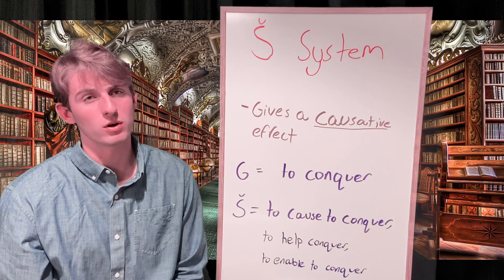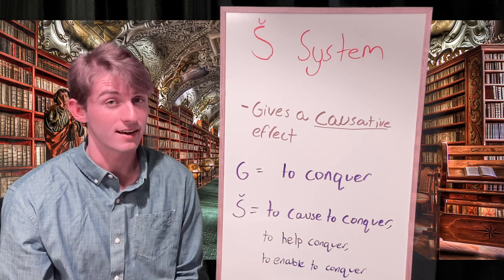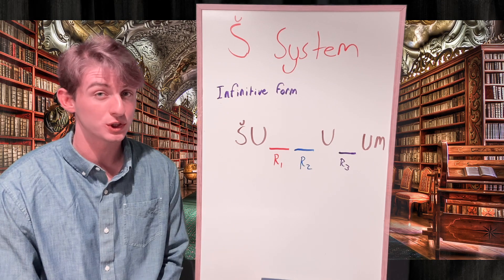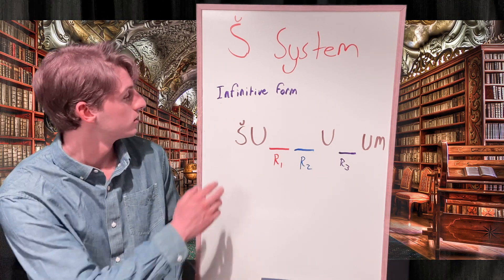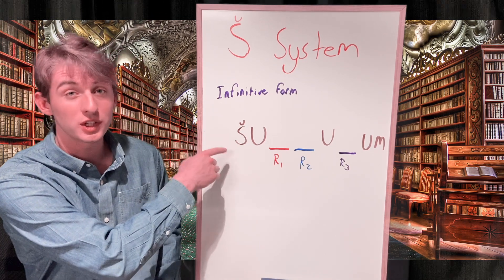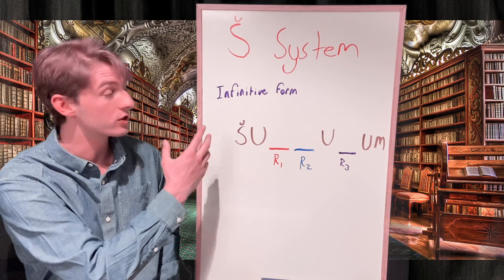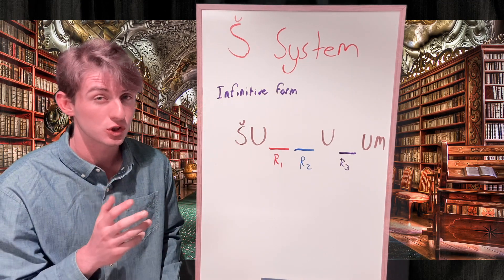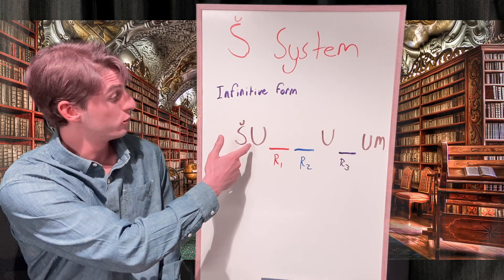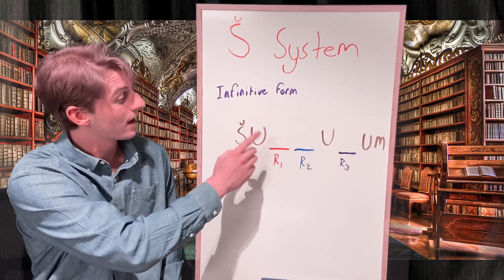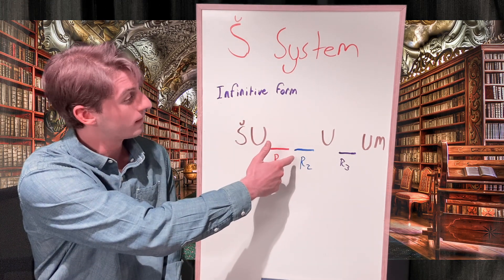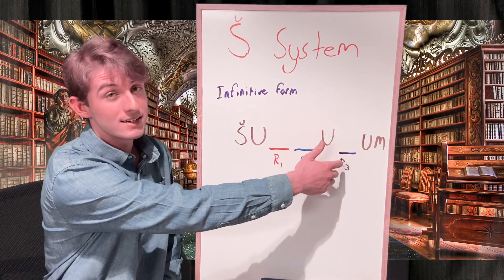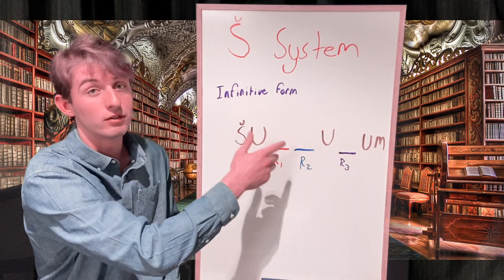Let's look at some infinitive forms to better understand the meaning of the Sheen system. Here I have the paradigm for our Sheen system infinitive. It begins with the letter Sheen — which is an S with a hook on top denoting the 'sh' sound — followed by a U, our first root letter, then immediately our second root letter, another U, our third root letter, and our case ending, which here is the nominative -um.